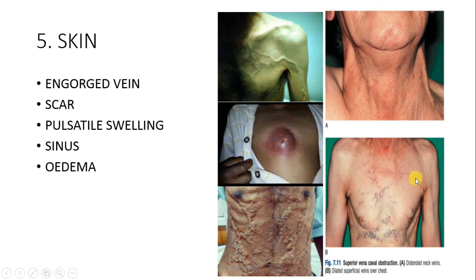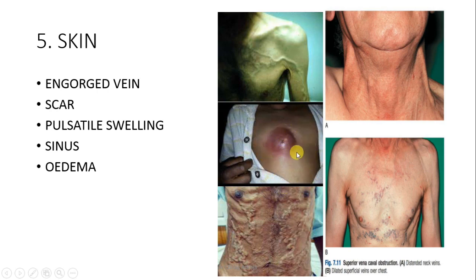Skin findings: engorged veins seen due to superior vena cava obstruction. Scar marks — a patient with past history of ICD insertion. Intercostal swelling in case of empyema necessitans — rupture sinus is developed with continuous pus discharge. Edema in the chest wall: if edema is developing on one side only, it indicates empyema rupture to that side; diffuse edema over the whole chest is seen in cardiac failure.